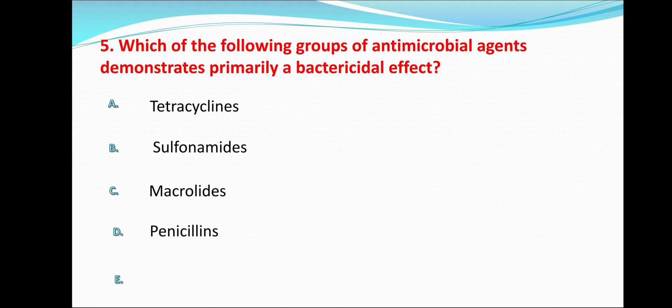Which of the following groups of antibacterial agents demonstrates primarily a bactericidal effect? Options are tetracyclines, sulfonamides, macrolides, and penicillins. Bactericidal means killing of bacteria, while bacteriostatic means inhibiting the growth of bacteria. Tetracycline is primarily a bacteriostatic agent. Similarly, sulfonamide and macrolide are also bacteriostatic. Penicillin is the bactericidal agent, so option D is the correct answer for question number 5.